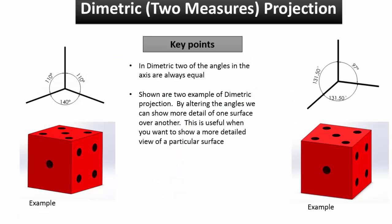In dimetric, two angles in the axis are always equal. Shown are two examples of dimetric projection. By altering the angles, we can show more detail of one surface over another. This is useful when you want to show a more detailed view of a particular surface.